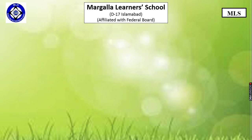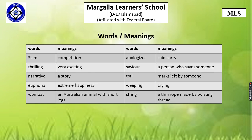Now that we have learned the new words, let's learn their meanings. The first word is slam, which means competition. Thrilling means very exciting. Narrative means a story. Euphoria means extreme happiness. Wombat is an Australian animal with short legs. Apologized means said sorry. Savior is a person who saves someone. Trails are the marks left by someone. Weeping means crying. String is a thin rope made by twisting thread.